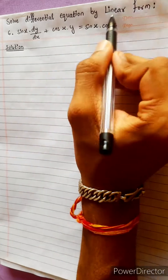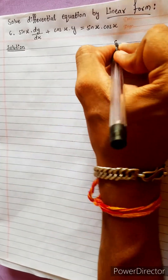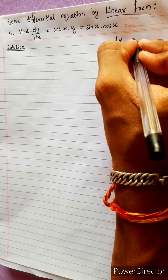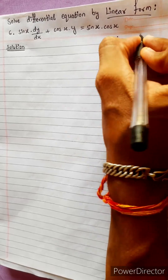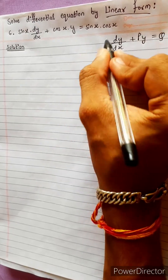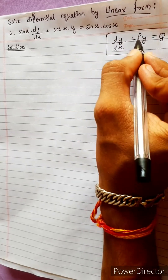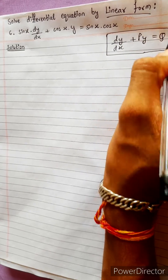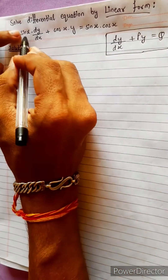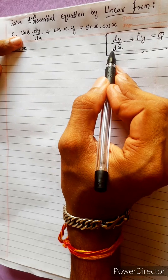Solve differential equation by linear form. Linear form is the standard form: dy/dx plus p·y equals q. We will compare the equation. When we have p and q, the function of x will be y. Now sin x is the standard form.